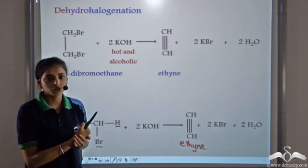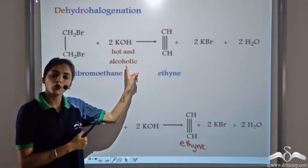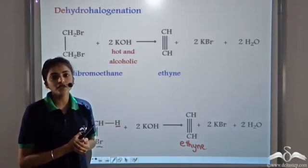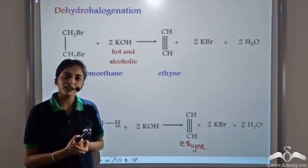By using dehydrohalogenation, that is in the presence of hot and alcoholic KOH, we can prepare the appropriate alkyne.